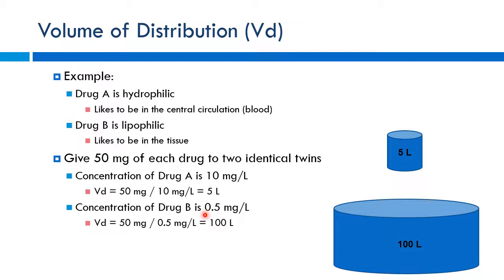Drug B has a much higher volume of distribution in that patient because it has far more tissue to partition into. This illustrates how VD reflects where the drug actually goes in the body — a high VD drug is extensively distributed into tissues, while a low VD drug remains concentrated in the bloodstream.